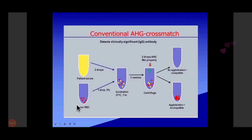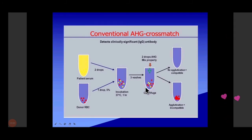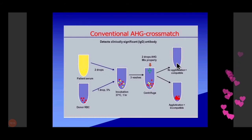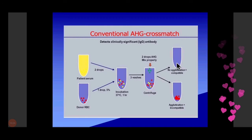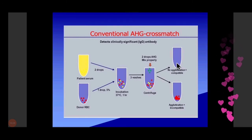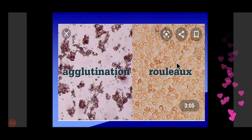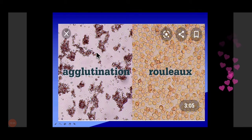Here the patient serum and donor red blood cells — two drops — are incubated for one hour, then three washes, then two drops of antihuman globulin. Mix properly and observe for agglutination. If there is agglutination, it is incompatible for transfusion. If there is no agglutination, it is compatible. When you go to the blood bank, they will cross-match your sample and prepare the slide. You check whether there is agglutination on the microscope. These coin-stack formations are rouleaux — if you see this type, it is compatible.